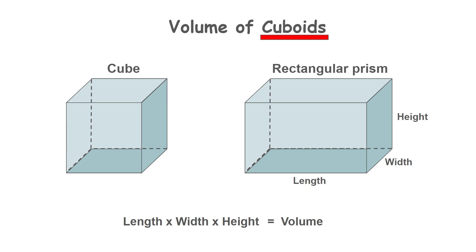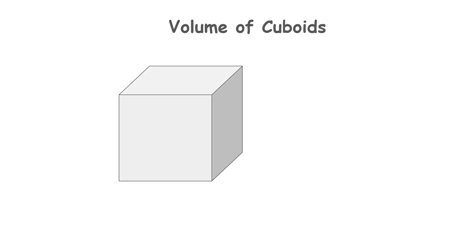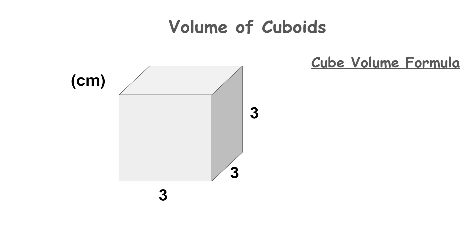Let's dive a little bit deeper into what that means. In our first example we're going to calculate the volume of a cube with a length of three centimeters. Each of the six faces of a cube are the same size, so this means the width and the height of the cube will also be three centimeters.